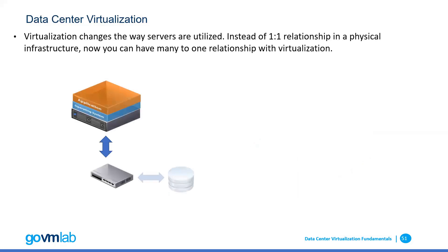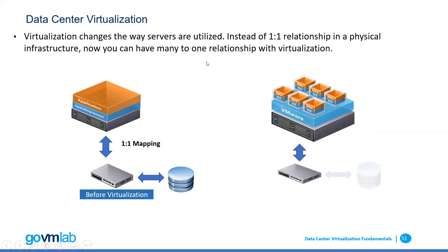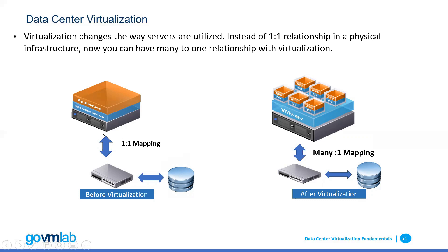Virtualization changes the way servers are utilized. Instead of a one-to-one relationship in a physical infrastructure, now you can have a many-to-one relationship with virtualization. Before virtualization, if a physical server needed to communicate on a network, it required one network card, consuming one port of your physical switch. So if you required 10 physical servers, you would require 10 physical network adapters and 10 physical switch ports to make them communicate.